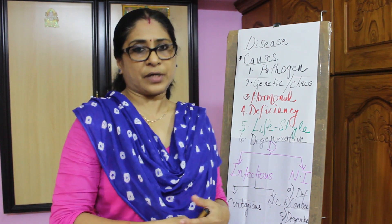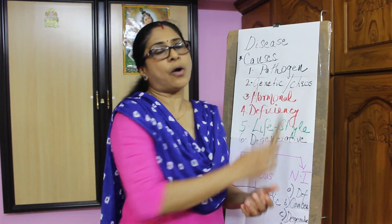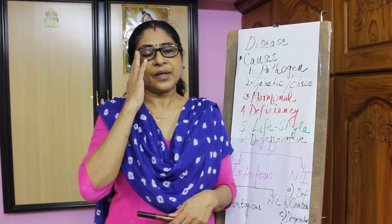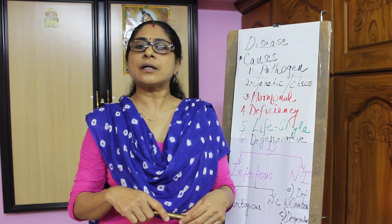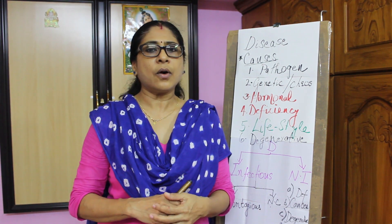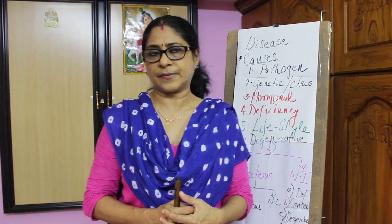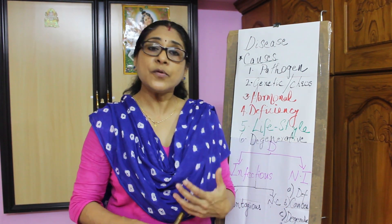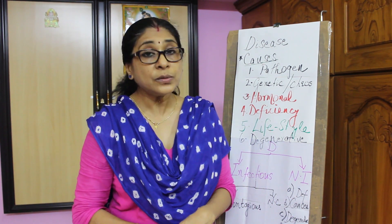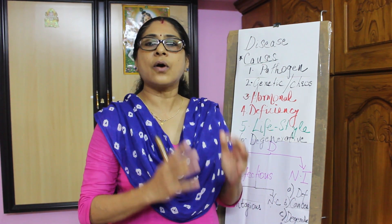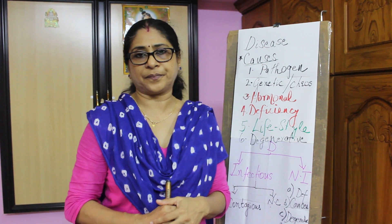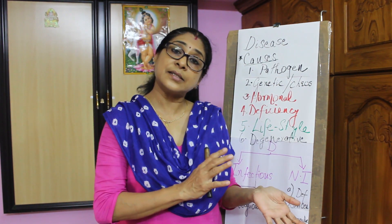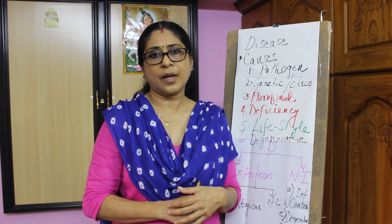The second cause is genetic or chromosomal reasons. There are certain diseases which are caused due to genetic problems or due to chromosomal aberrations. For example, colorblindness is a genetic disorder. Hemophilia is a genetic disorder. Down syndrome is a disorder caused by a chromosomal aberration. So that is the second cause for a disease — either a genetic disease or a chromosomal disorder.